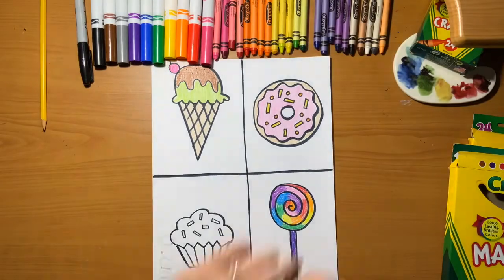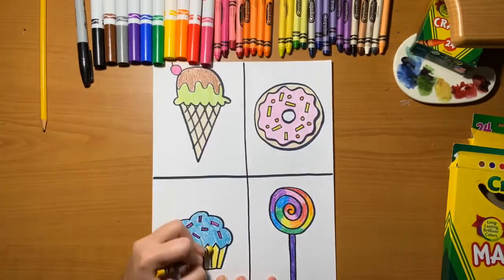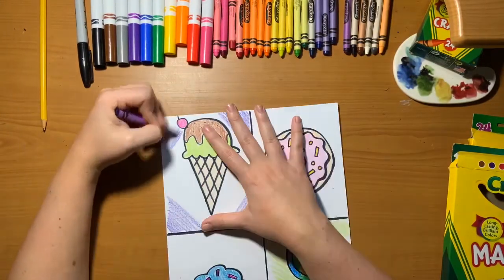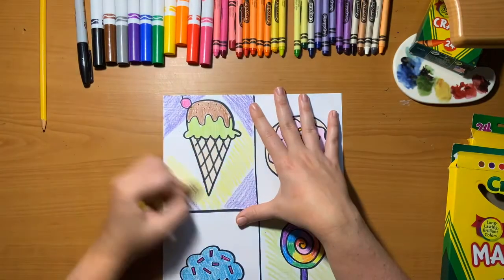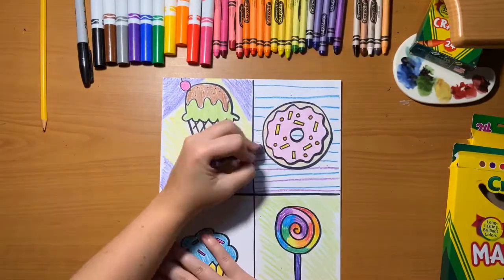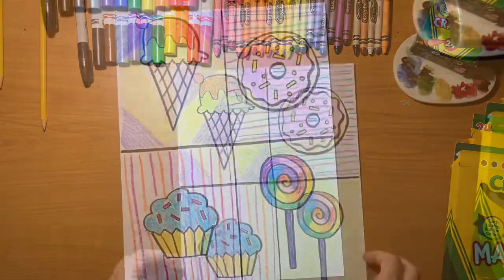If you finish coloring your four desserts, you can add a background. That does not mean the back of your paper. That means the space around what you just drew. You can add patterns, lines, designs, anything you want to. And if you finish that, you can free draw on the back of your paper. Hope you guys enjoy!